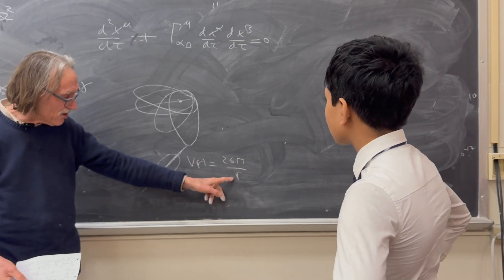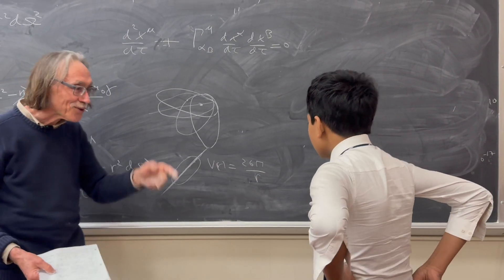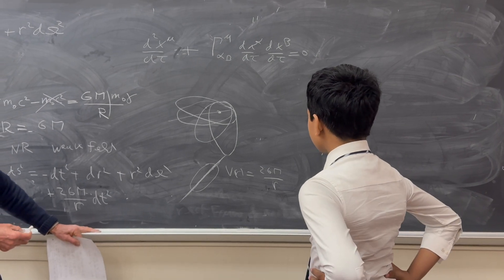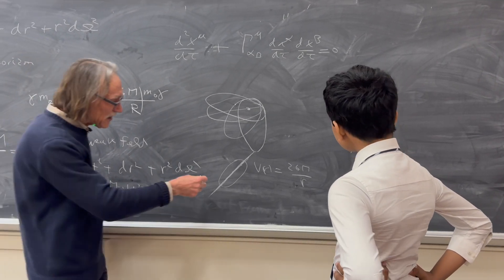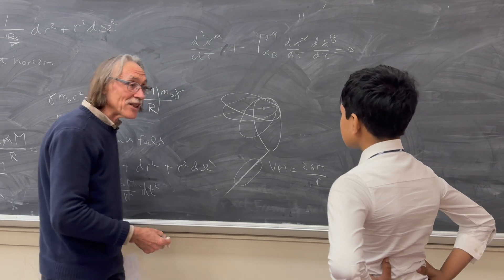And in general relativity the potential is no longer 1 over R. There's a correction to 1 over R. And that is why you have perihelion precession.